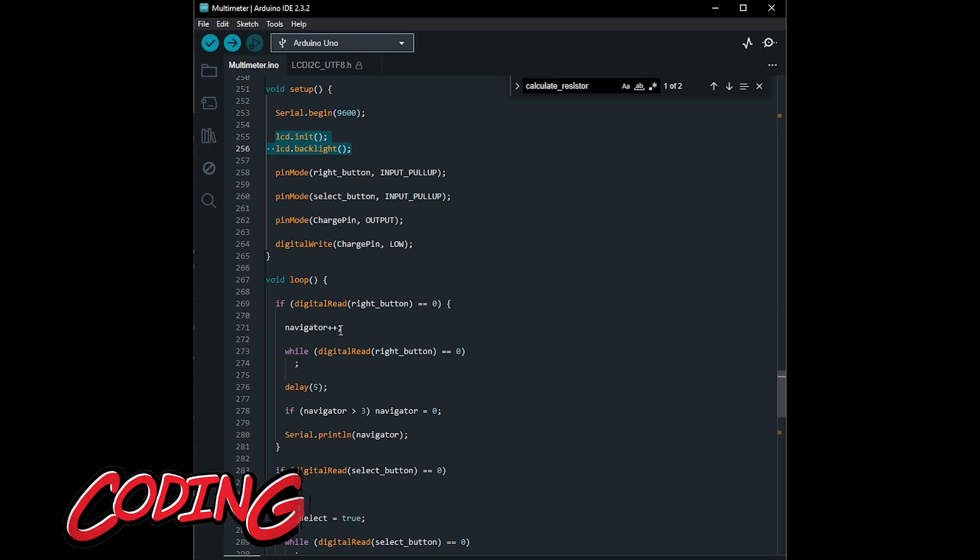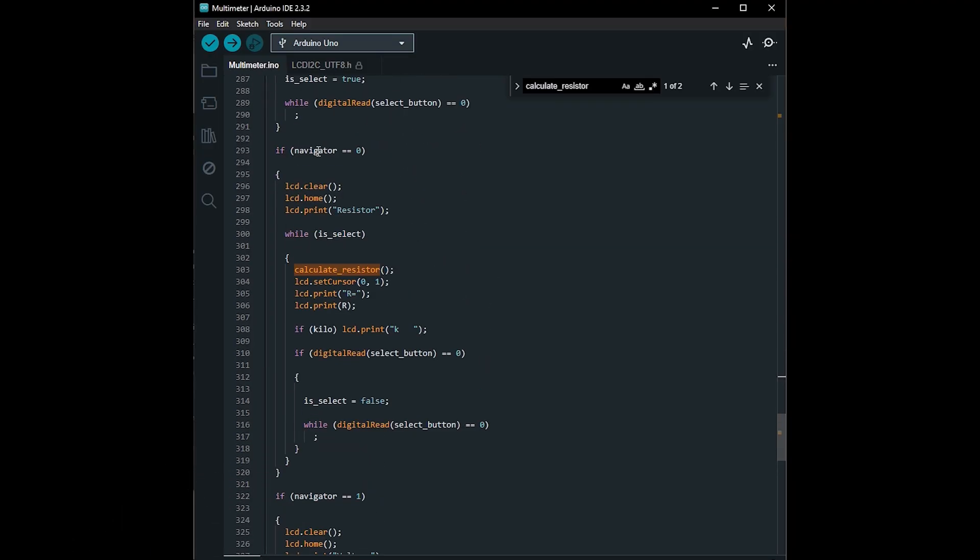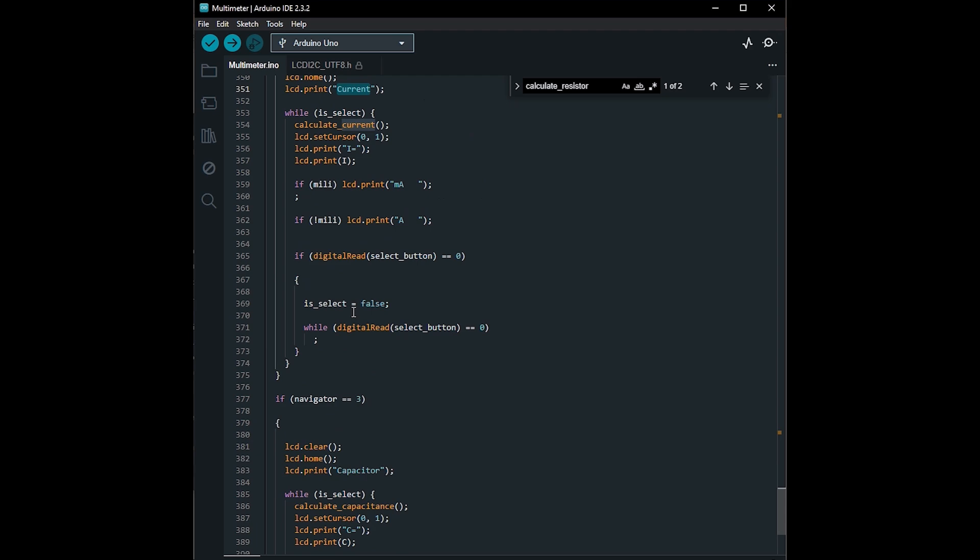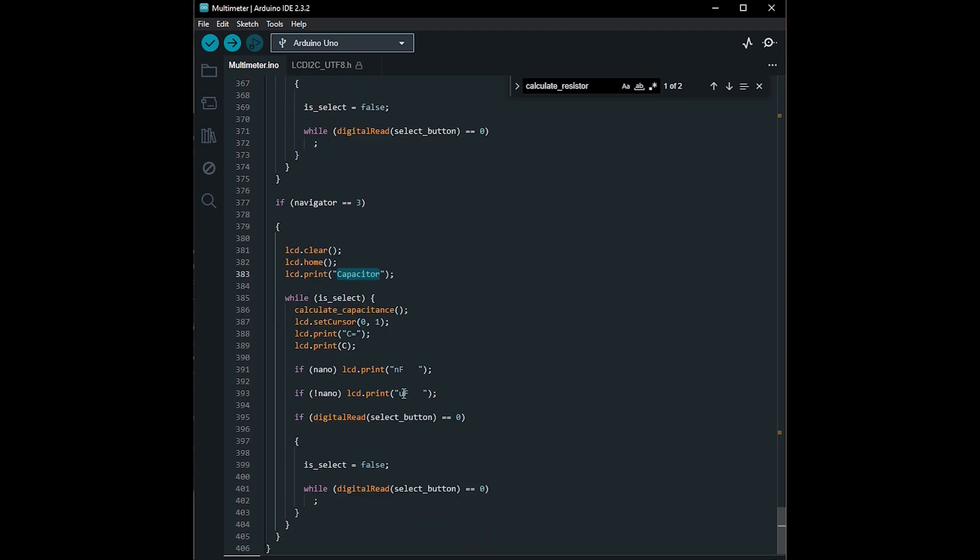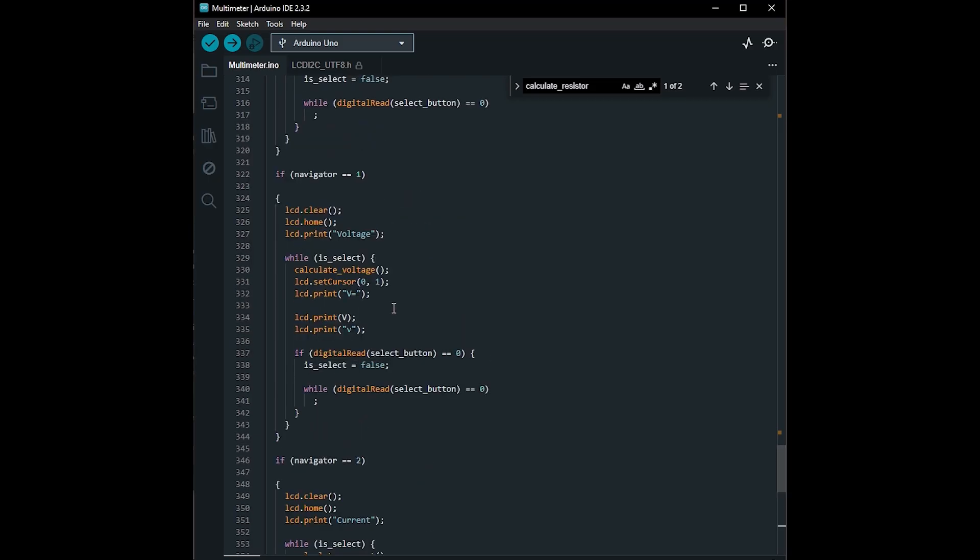The code initializes the LCD, sets the cursor position, and prints the measured values. The wiring and code for this step are straightforward, and once everything is connected, you will have a fully functional digital multimeter.